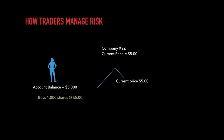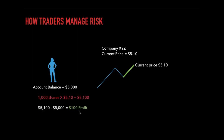So they buy 1,000 shares at $5, wait for the price to go up — maybe it goes to $5.10, they're happy with a 10-cent profit, and they decide to sell. When they sell for that 10-cent profit, they just made $100: 1,000 shares sold at $5.10 equals $5,100, minus the original $5,000 investment equals a $100 profit.